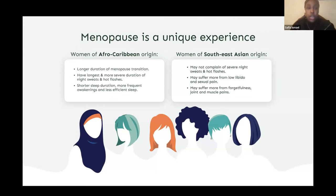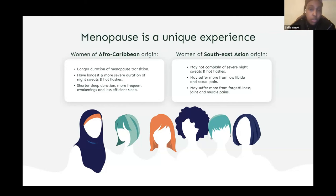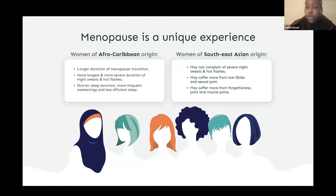To put this in perspective, let's look at how symptoms differ by ethnicity. The British Menopause Society released a guide for clinicians describing menopause in ethnic minority women. Women of Afro-Caribbean origin were more likely to experience a longer duration of perimenopause, more severe vasomotor symptoms including night sweats and hot flashes, and more sleep disturbances. In contrast, women of Southeast or East Asian origin — such as Chinese and Japanese women — may not experience vasomotor symptoms at all, but are more likely to suffer from low libido, sexual pain, joint and muscle pains, and forgetfulness.